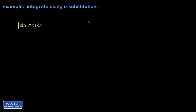Let's integrate sine of pi x. I'm going to take the informal approach first. The informal approach is just recognizing that all we're doing here is the chain rule backwards. So I have the sine of some function. Well, maybe that came from the cosine of that function. But the chain rule would have tacked on a factor of pi, if that's what it came from.